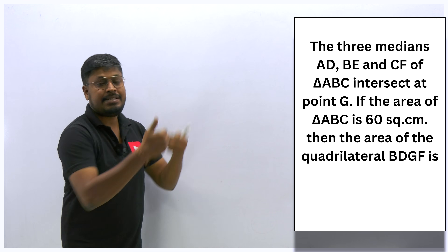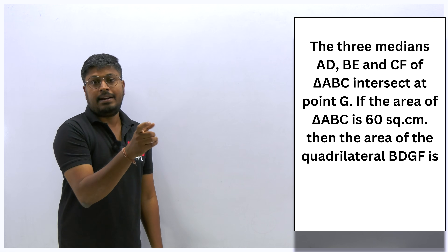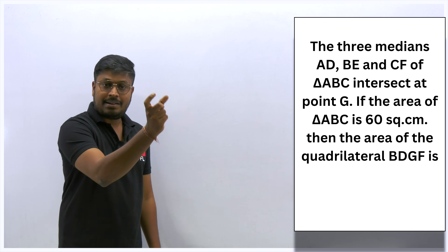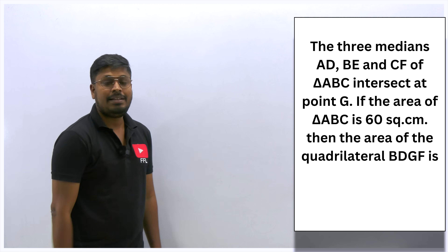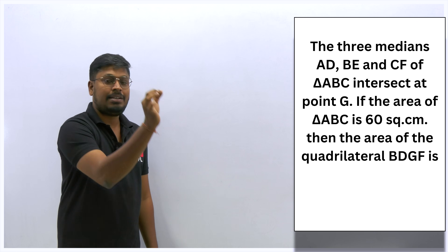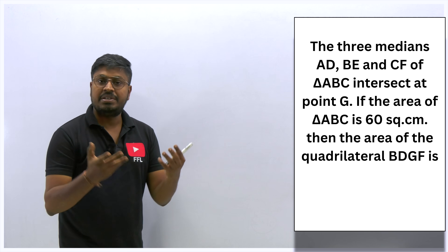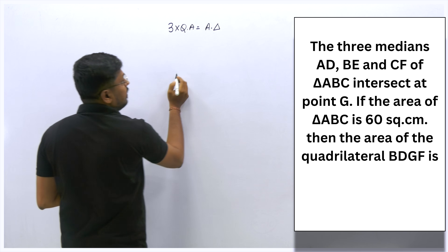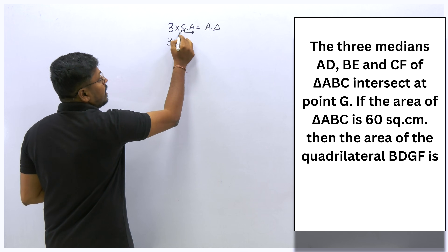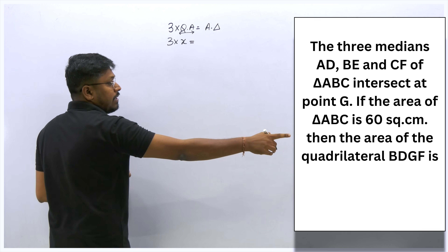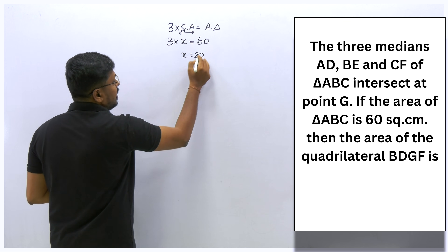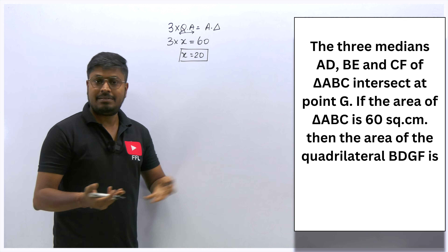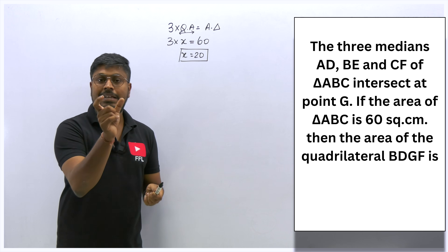Without drawing a diagram or writing a formula, you can directly solve the question. Three quadrilaterals equal the area of a triangle. We need to find one quadrilateral: 3 × X = 60, so X = 60 ÷ 3 = 20. The answer for this question is 20 square centimeters — solved by using the basic concept that three quadrilateral area equals area of a triangle.